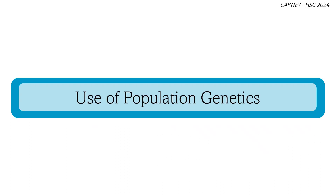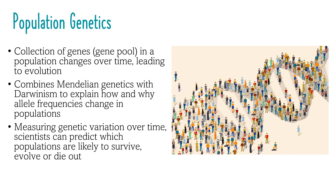The use of population genetics: genetic similarities and differences within and between species can be observed at the level of physical traits, genes, specific versions of genes, or molecules. To understand these differences, scientists conduct studies where they collect and analyse data, helping them understand how individual populations and species vary. Population genetics is the study of how the gene pool — the collection of all genes in a population — changes over time, leading to evolution.